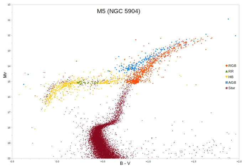Horizontal branch stars were discovered with the first deep photographic photometric studies of globular clusters and were notable for being absent from all open clusters that had been studied up to that time. The horizontal branch is so named because in low-metallicity star collections like globular clusters, HB stars lie along a roughly horizontal line in a Hertzsprung–Russell diagram.